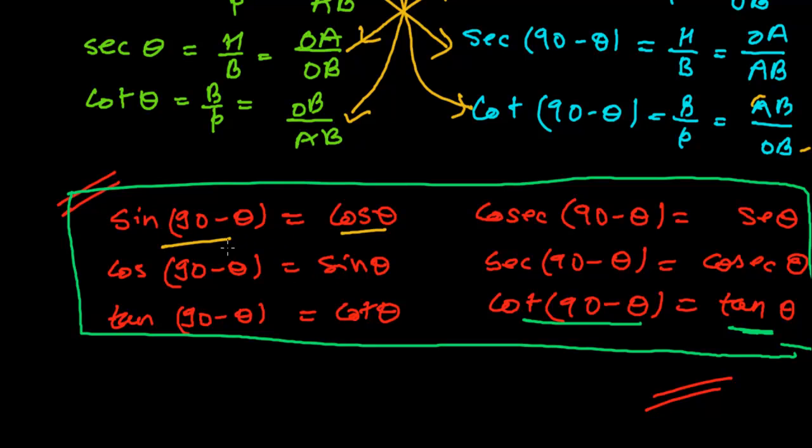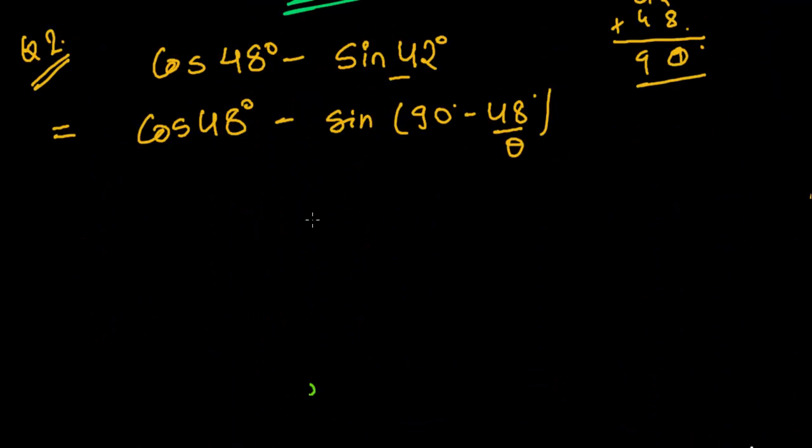sin(90° - θ) is cos θ, but theta is 48°. So cos 48° minus cos 48°. I can easily cut this, and the value is zero. That's how we solve this.